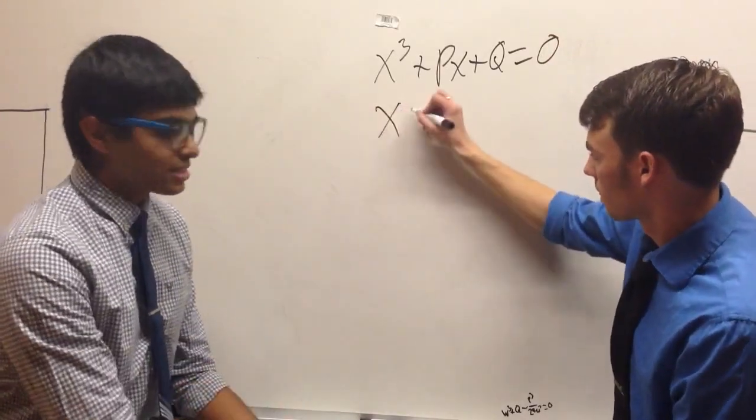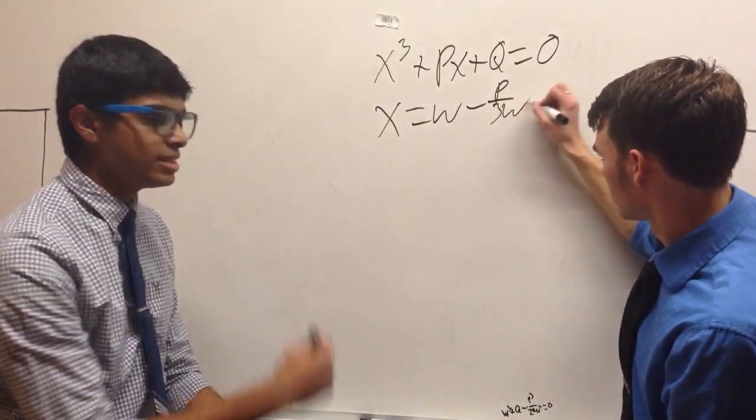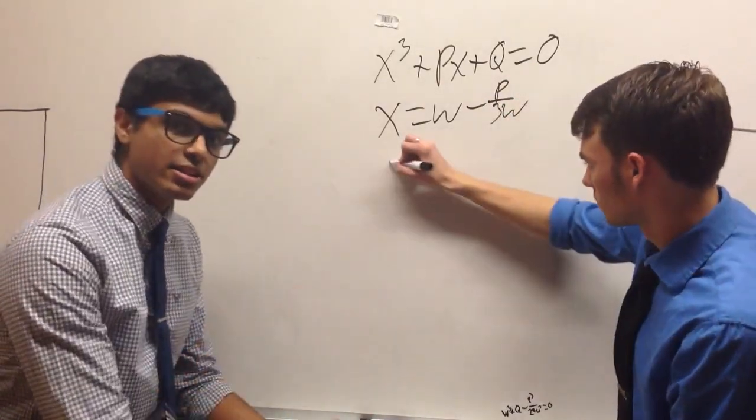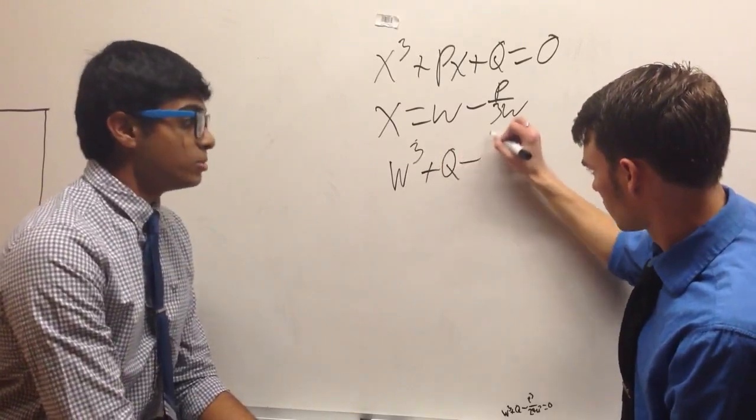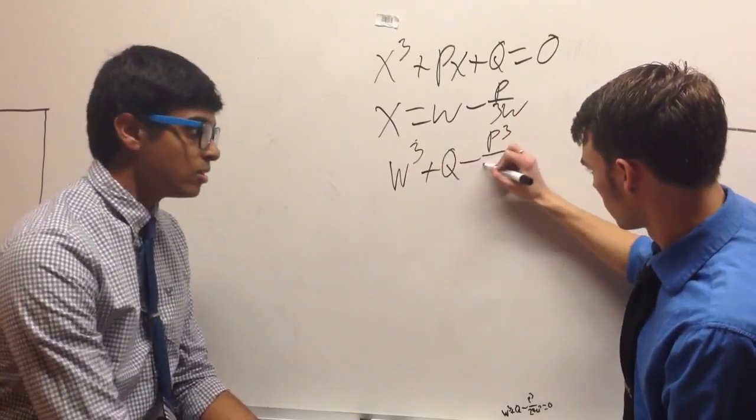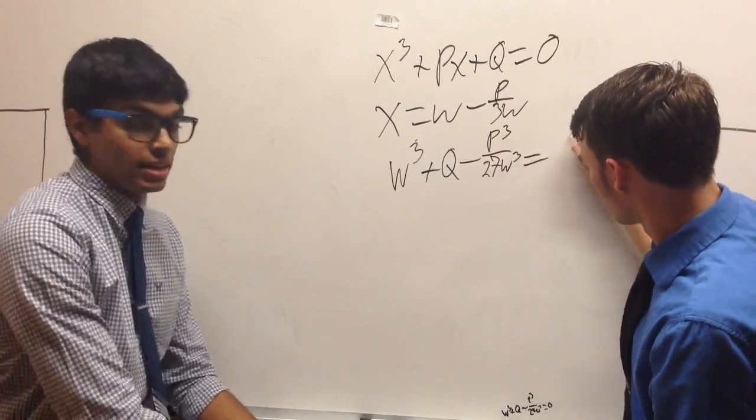Then what Vietta did was he let x equal w minus p over 3w. And with this, he substituted it back into the standard cubic equation for x. And in turn, got w cubed plus q minus p cubed over 27w cubed and equal to zero.